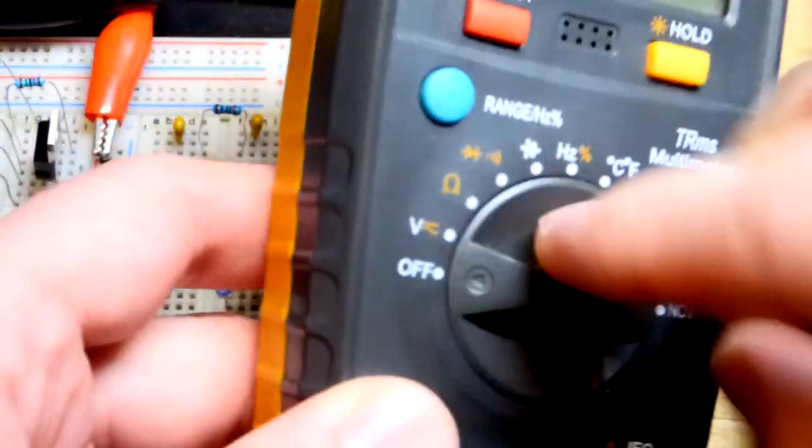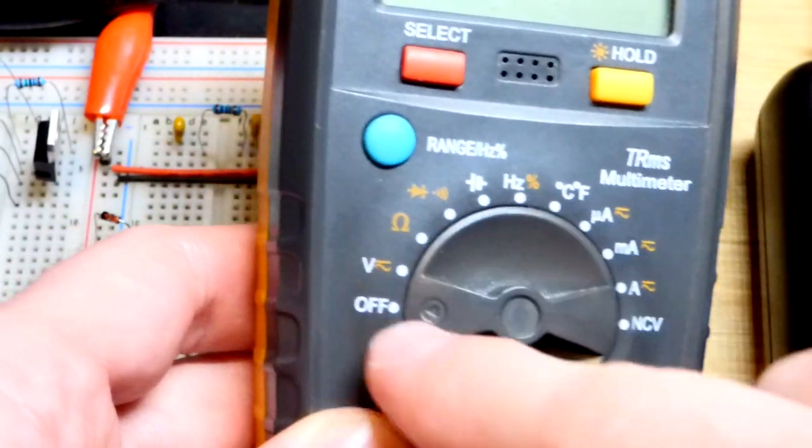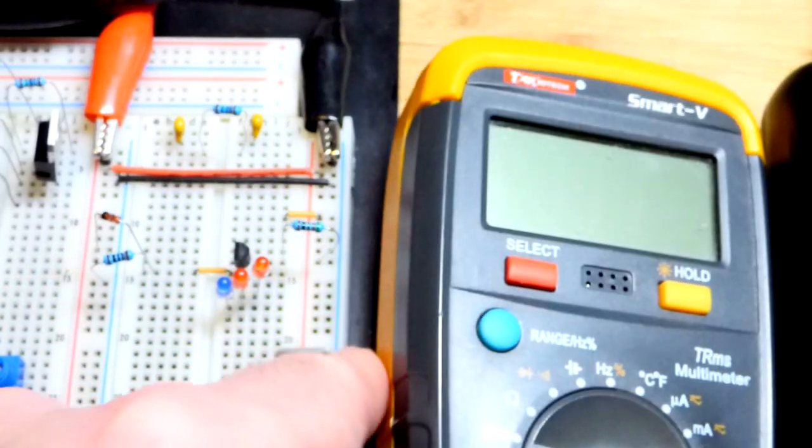So you get the point I'm sure. Make sure you turn the meter off and get it off of measuring current. If you don't have a meter like this where you gotta get it off of current to turn it off to begin with, but in any case.